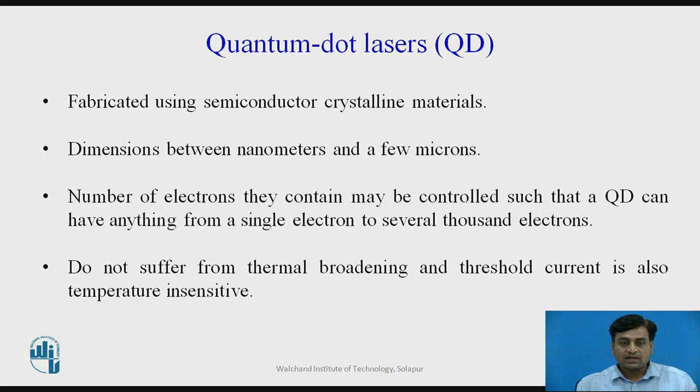Quantum dot lasers are fabricated using semiconductor crystalline materials and have typical dimensions between nanometer and few microns. The size and shape of these structures and therefore the number of electrons they contain may be precisely controlled such that a quantum dot laser can have anything from single electron to several thousand electrons. Quantum dot lasers do not suffer from thermal broadening and their threshold current is also temperature insensitive.